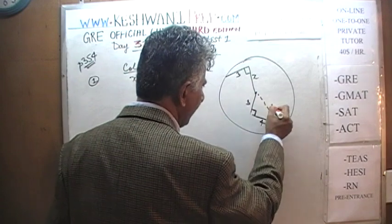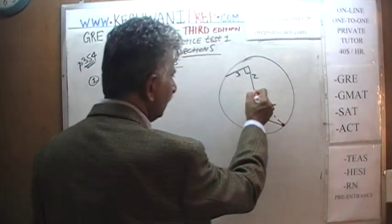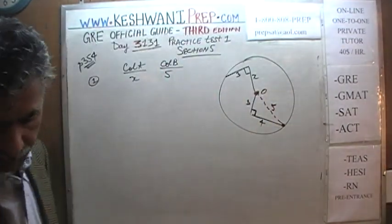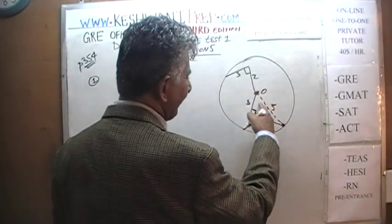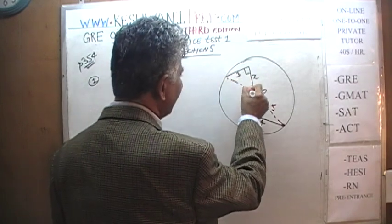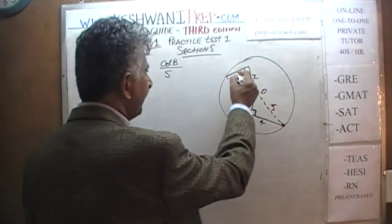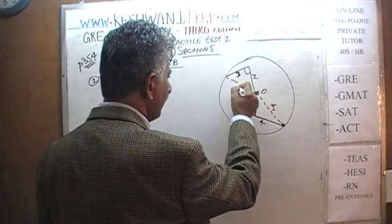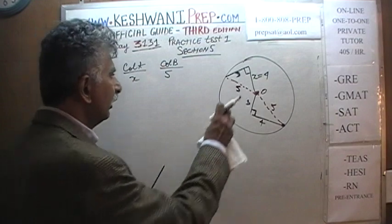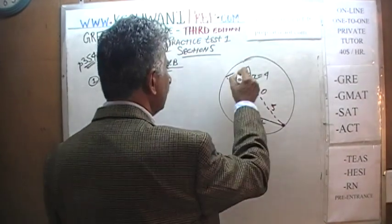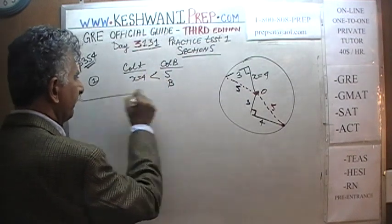If you draw the dotted line, it's a 3-4-5 triangle and this is the right angle. The distance from one point to another is the radius of the circle because point O is the center. If that's the radius and it's 5, then in the second triangle, the hypotenuse is 5 and one side is 3, so the other side has to be 4. X equals 4, and therefore 4 is less than 5. The answer is B.